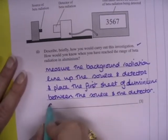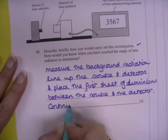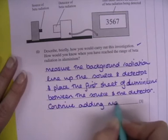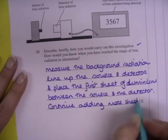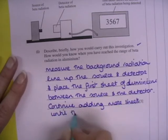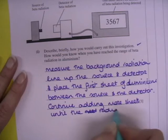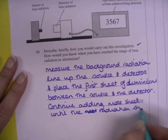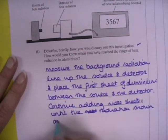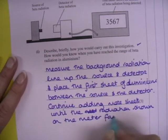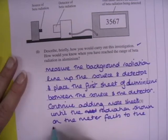And we continue adding more sheets. So we remove all the sources until the radiation shown on the meter falls to the background level that we measured initially.